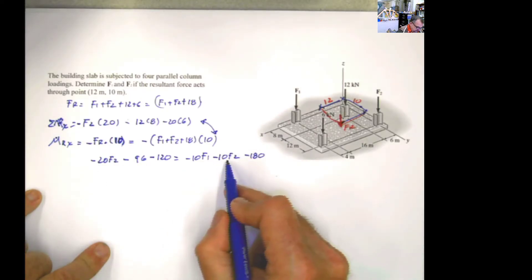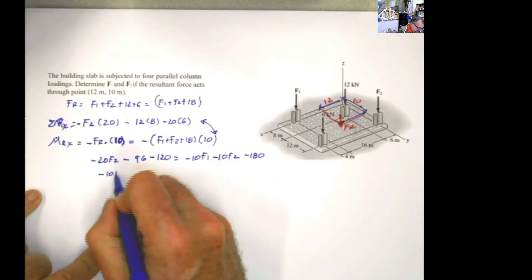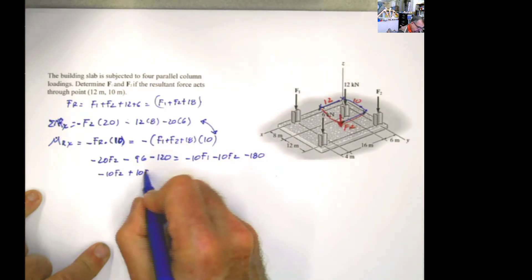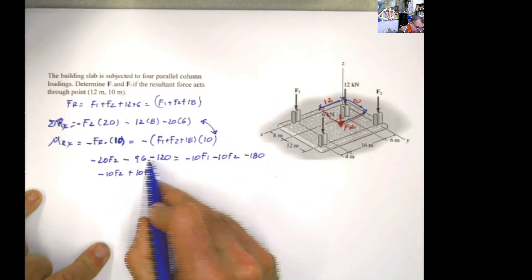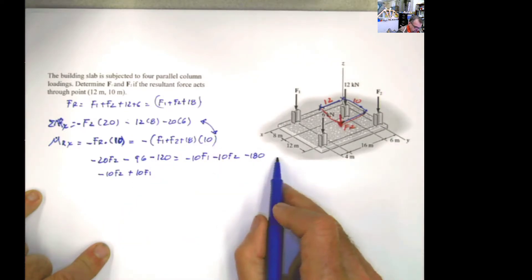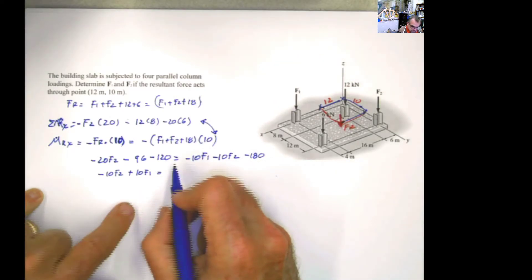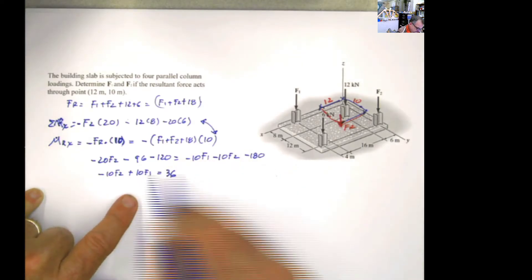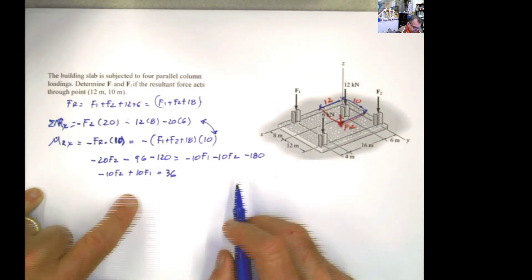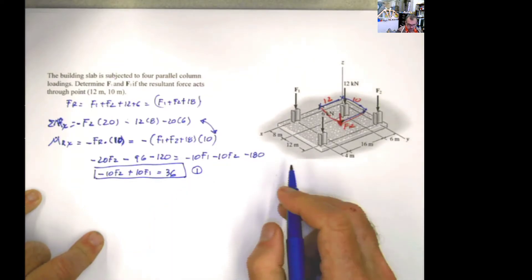Passing the F2 terms to one side: negative 20 plus 10 gives negative 10F2. Passing the F1 term gives plus 10F1. Adding the constants: 216 negative, passed to the other side becomes positive 216 minus 180, giving 36. So we have one equation from the x-axis: negative 10F2 plus 10F1 equals 36.